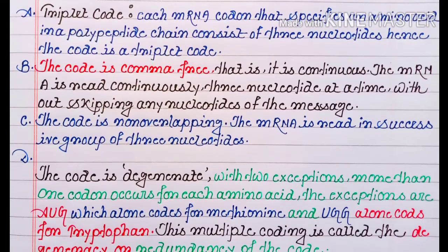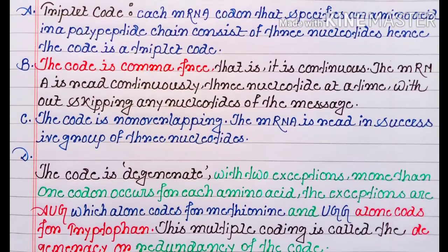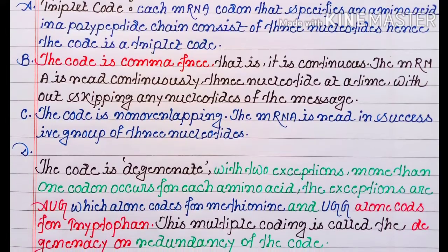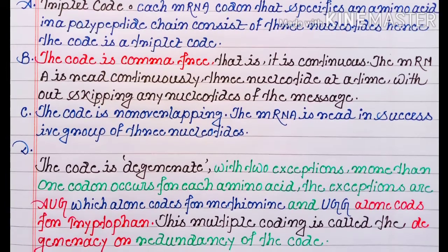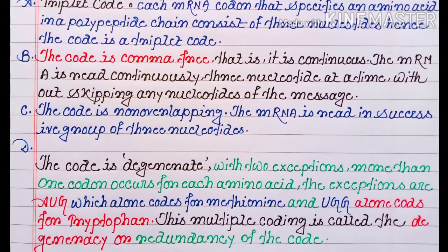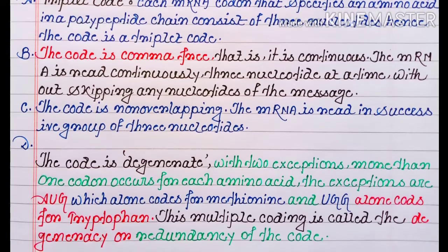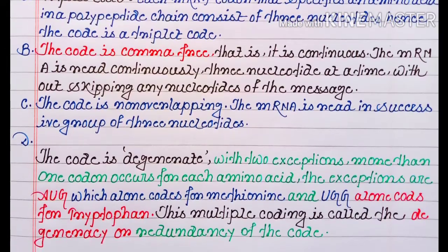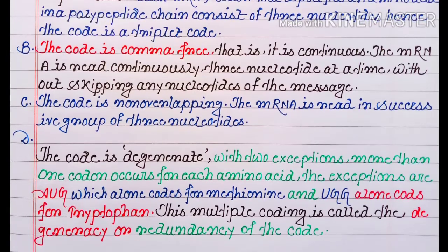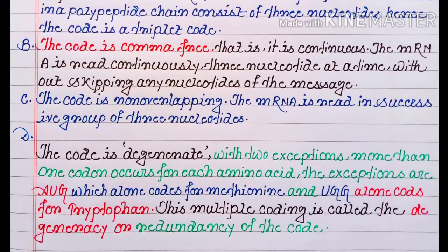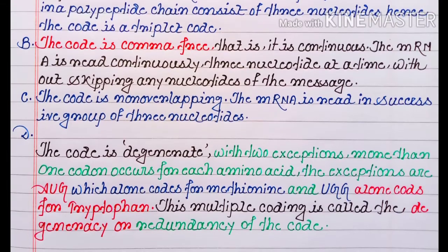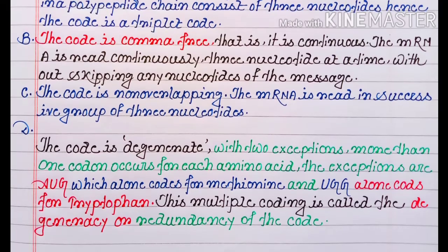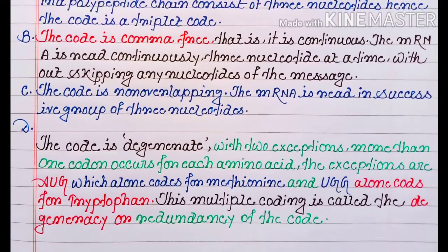Next, the code is degenerate. With two exceptions, more than one codon occurs for each amino acid. The exceptions are AUG, which alone codes for methionine, and UGG, alone codes for tryptophan. This multiple coding is called the degeneracy of the code.